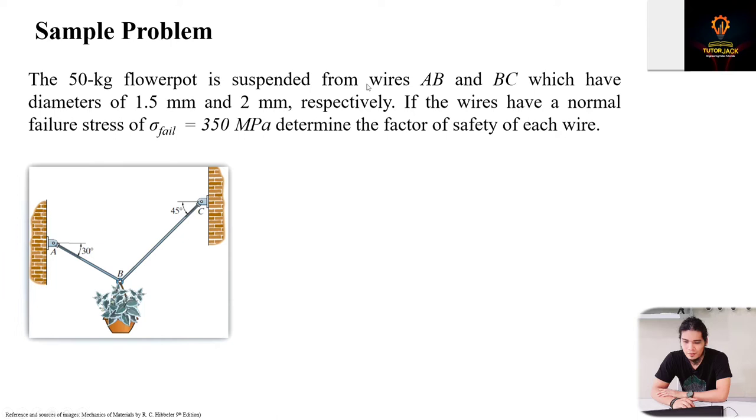Wires AB and BC have diameters of 1.5 millimeters and 2 millimeters respectively, so they have different diameters - AB is smaller compared to BC.